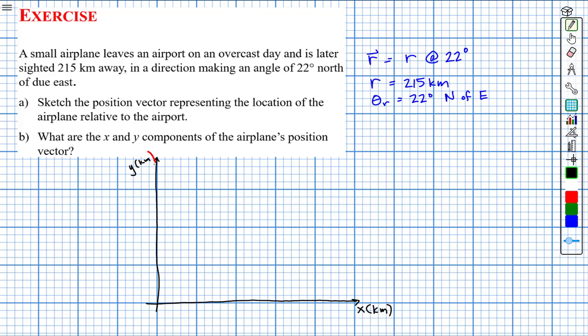If I'm going to graph this first, I'm going to try and make our graph as close to reality as possible and draw a vector that is 215 kilometers away. Before we draw this vector, we should specify the scale — that would probably be helpful. Every five divisions corresponds to 100 kilometers. So this is 100 kilometers, 200 kilometers, and 215 kilometers on the x-axis would be approximately right here.